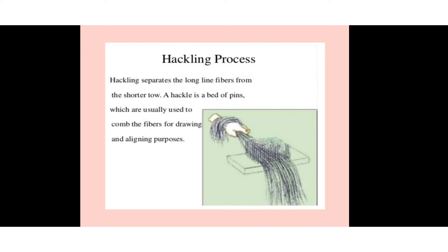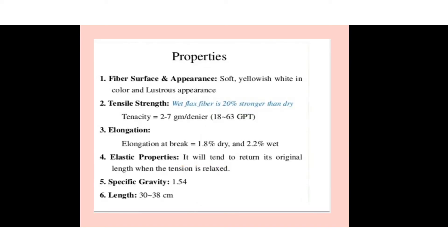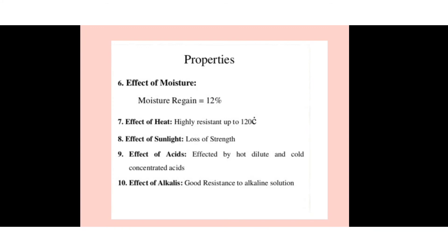Properties of flax fiber: the fiber surface and appearance are soft, yellow to white in color with a lustrous appearance. Tensile strength — flax is 20% stronger when wet than dry. Elongation is 1.8% in dry condition and 2.2% in wet condition. The elastic property allows it to return to its original length when tension is relaxed. Specific gravity is 1.54. Length is generally 30 to 38 centimeters. Moisture regain is 12%. Effect of heat: highly resistant up to 120°C.